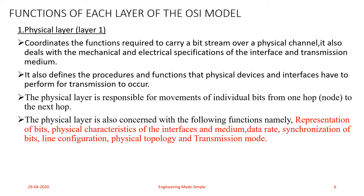The Physical layer also defines the direction of transmission between two devices — that is, whether the communication should be simplex, half-duplex, or full-duplex. Simplex is one-way communication: only one device can send and the other can receive. In half-duplex mode, both devices can send and receive but not at the same time. In full-duplex communication, two devices can send and receive simultaneously.